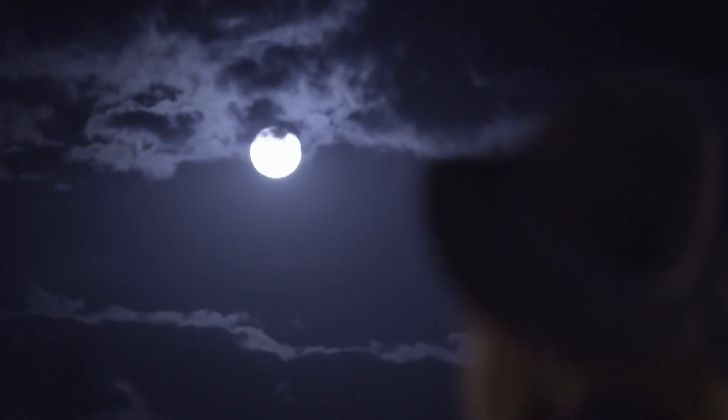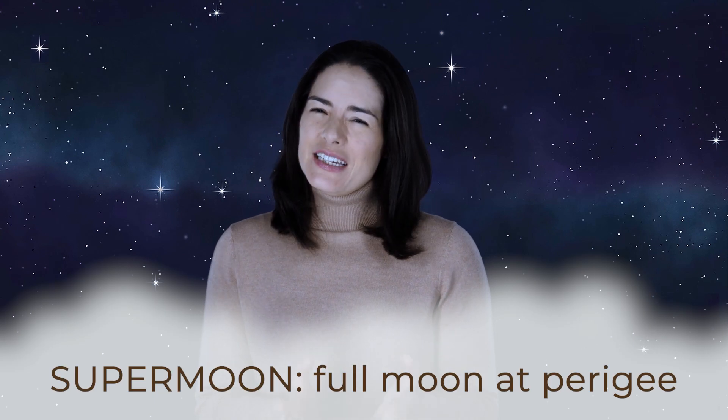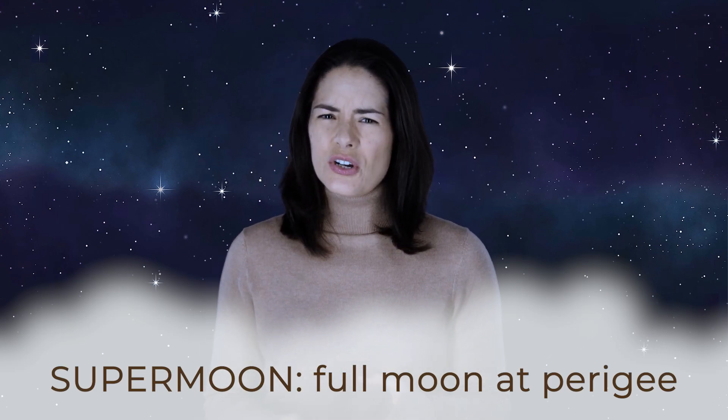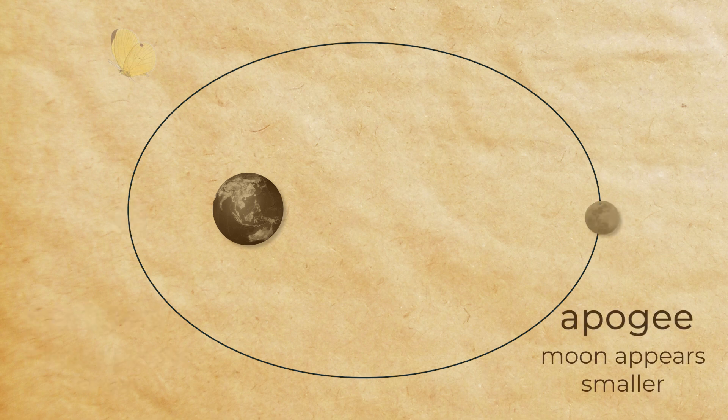Has this ever happened to you? A friend calls you up all excited and tells you there's a supermoon! So you rush outside and, meh, maybe it's a little bigger than usual, but you're not really sure. Of course, the moon isn't actually getting any bigger. But because it has an elliptical orbit, the moon isn't always exactly the same distance from the Earth. One side of the moon's path is closer to Earth than the other, so its apparent size varies. A supermoon just appears a little bit bigger because it's a little bit closer.